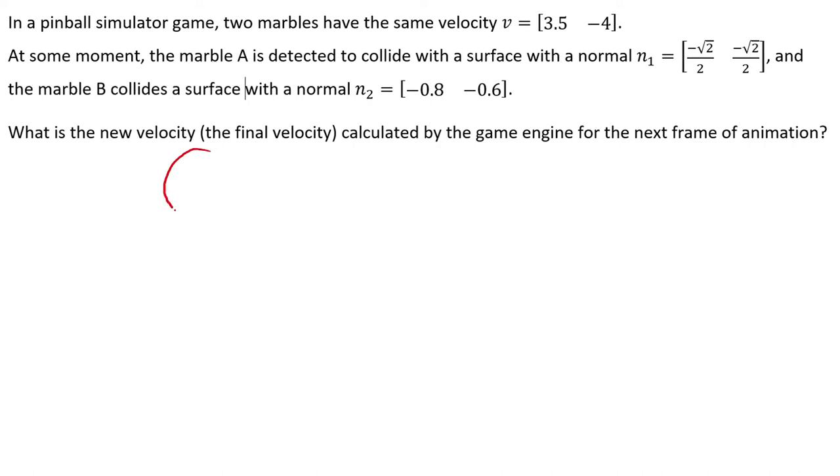There are two marbles, one and the other. They have the same velocity vector. It doesn't mean that they are at the same position. This means that they are moving in the same direction with the same speed, but perhaps in two different positions. And they hit the two walls with known normal values.